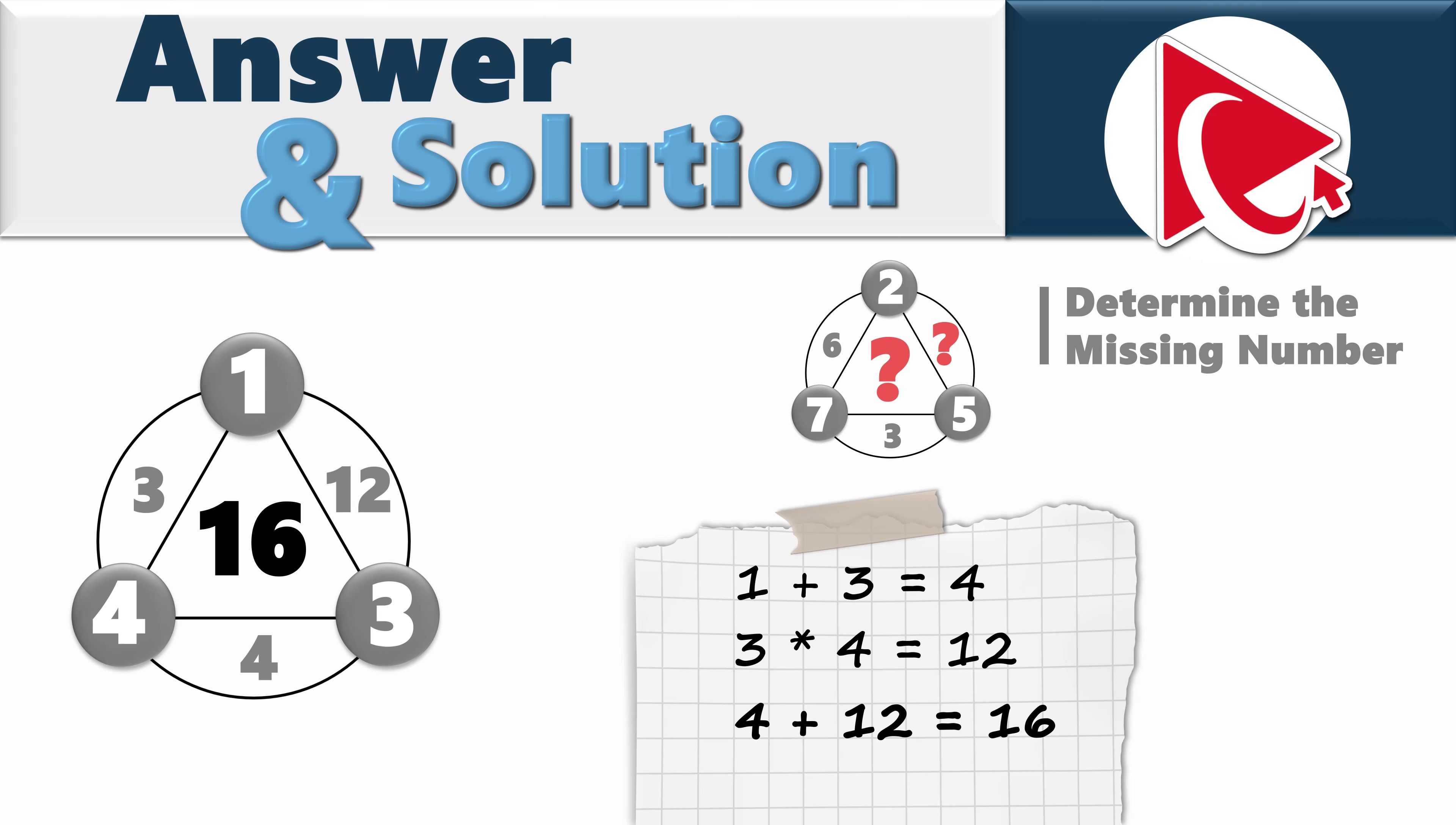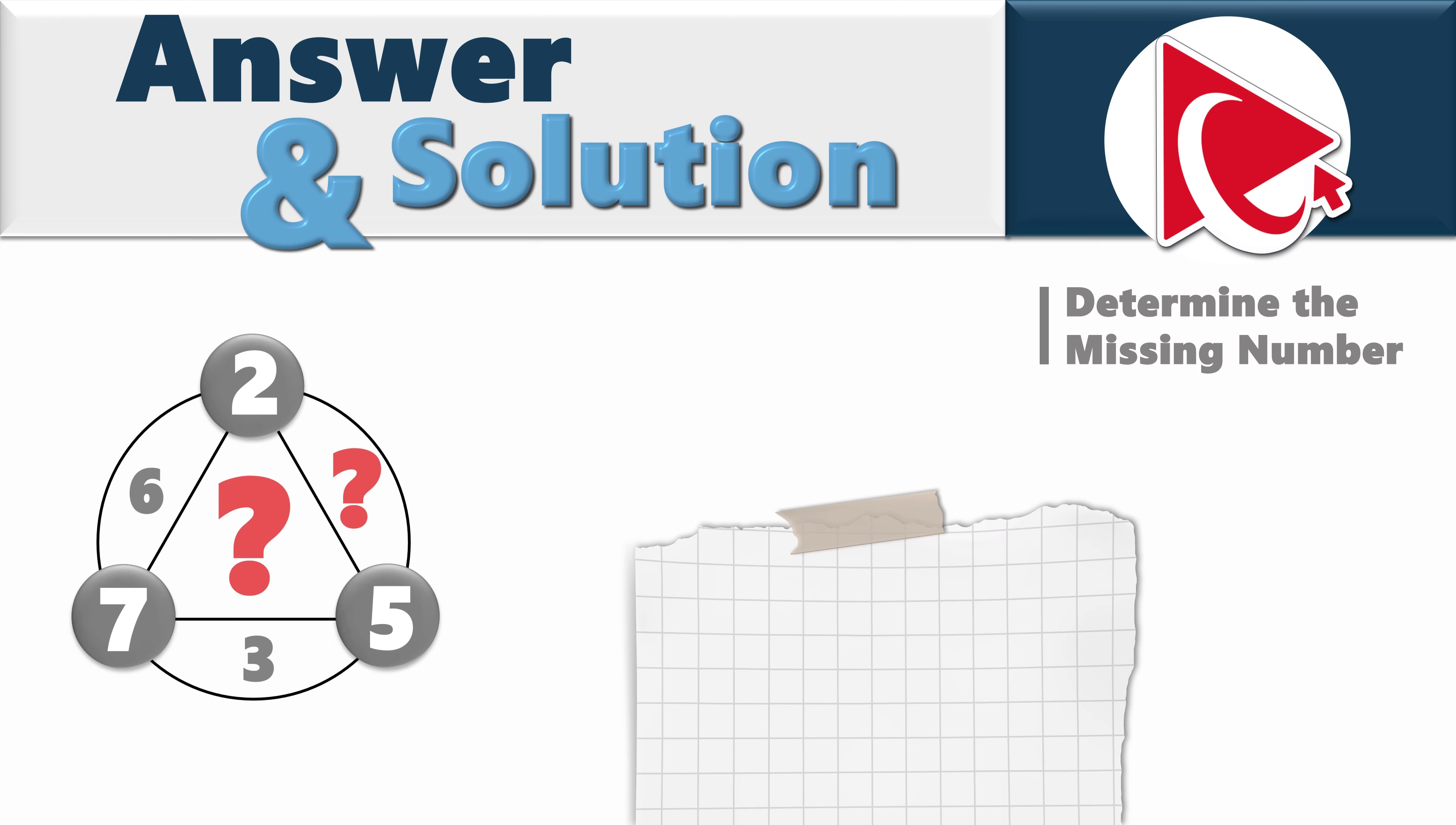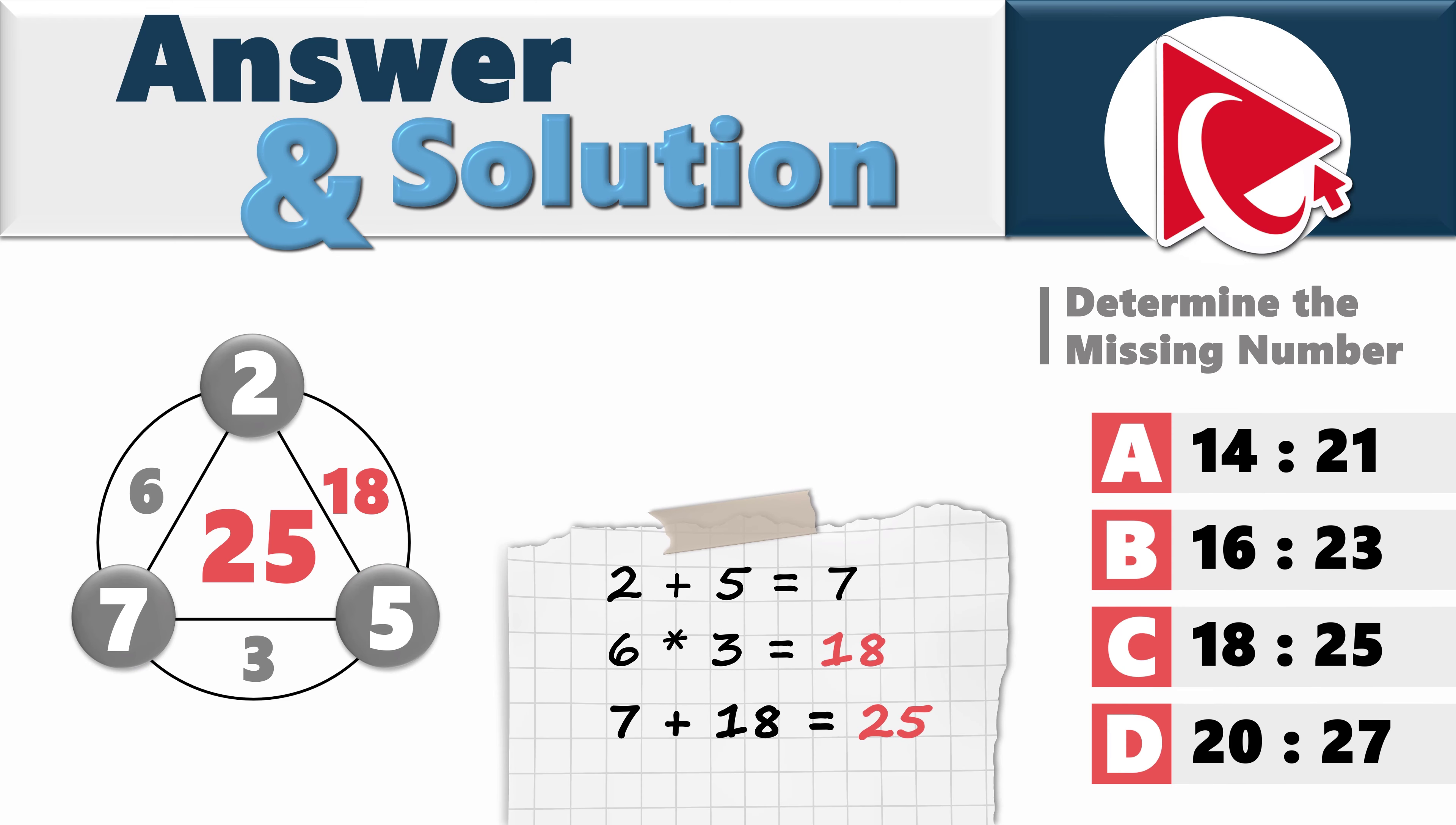Make sure you verify the pattern in the middle shape. But I am going to switch to the third shape, which has two numbers missing. 2 plus 5 equals 7. These are the calculations in small circles. 6 multiplied by 3 equals 18. These are the calculations inside the large circle. And 7 plus 18 equals 25. So the correct answer here is choice C, numbers 18 and 25.